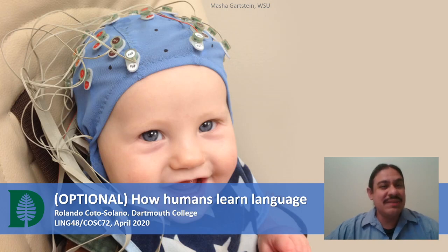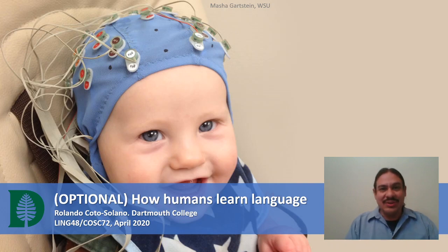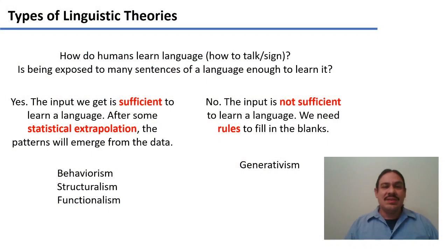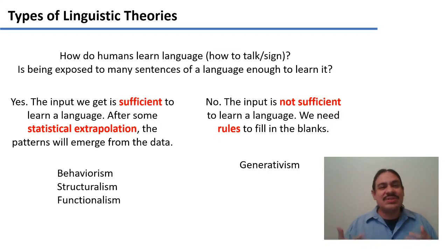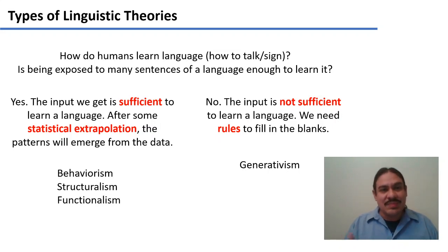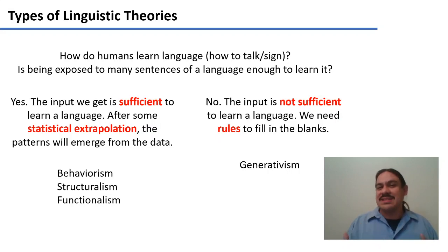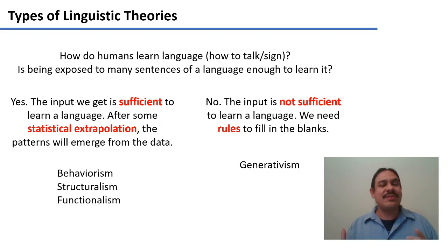Hi, this is an optional and very brief look at how humans learn language. How do humans learn to talk or to sign their sign language? There are many theories, and this is an area of research called psycholinguistics. There is no consensus, but it might be illuminating to look at the different theories and how they compare to what we do with computers.